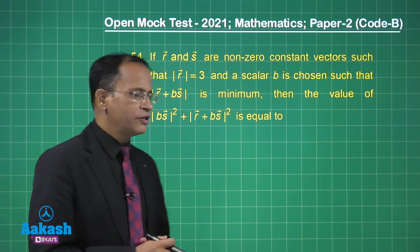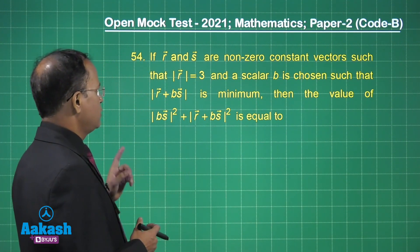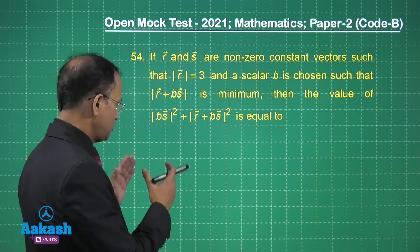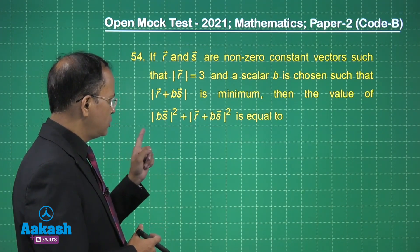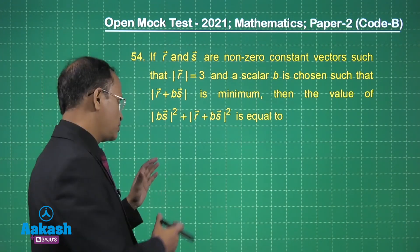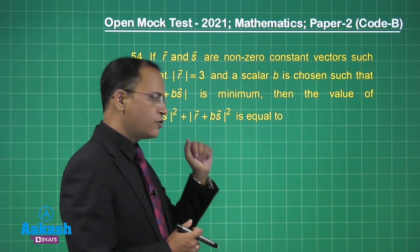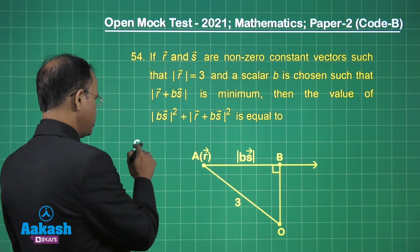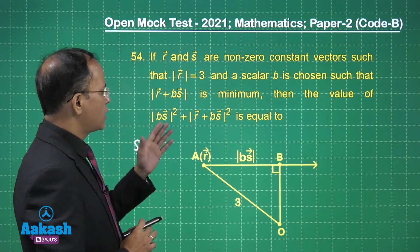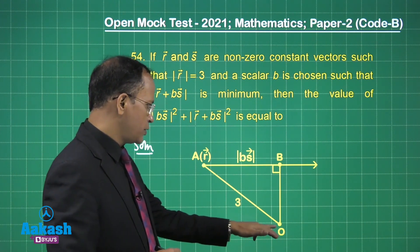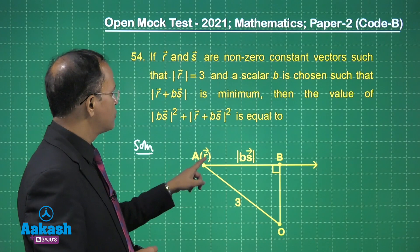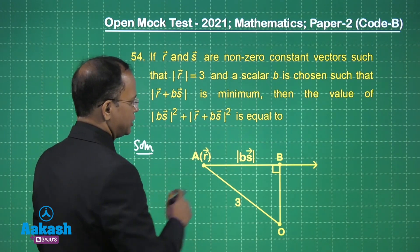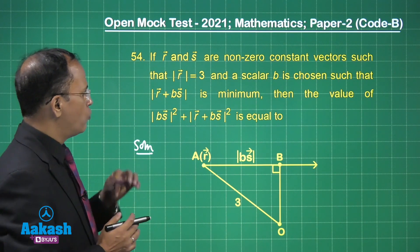Now let us talk about question number 54. If vectors r and s are non-zero constant vectors such that |r| = 3, and a scalar b is chosen such that |r + b·s| is minimum, then we need to find the value of |b·s|² + |r|².